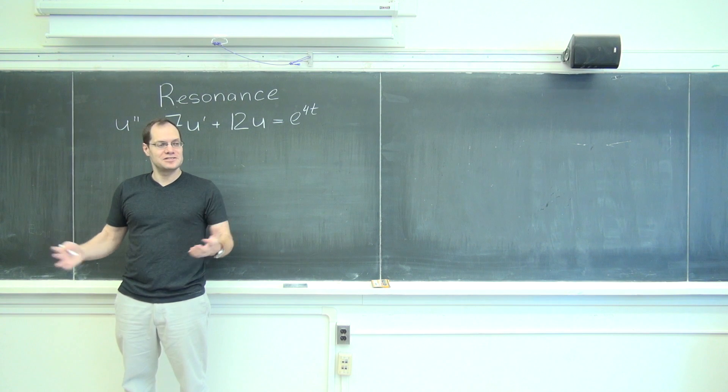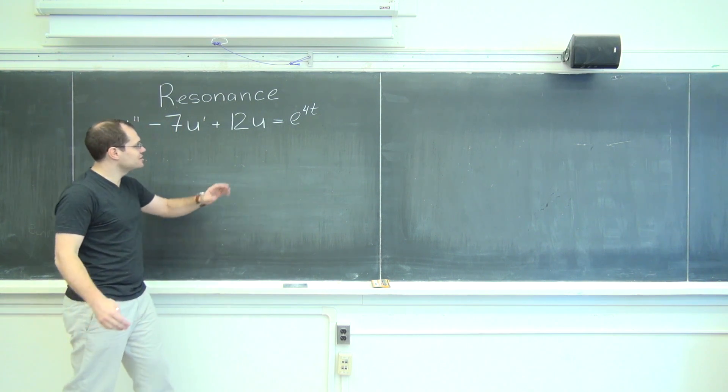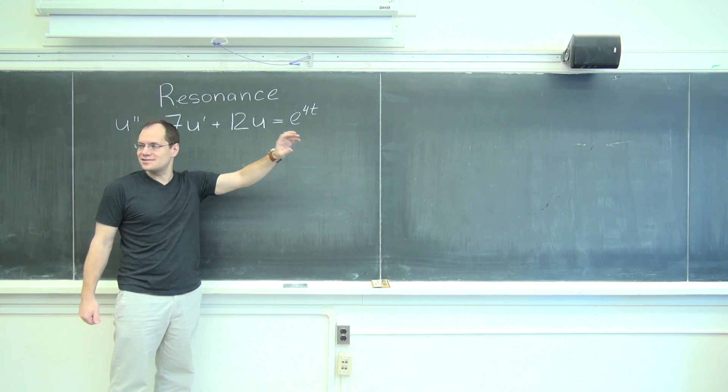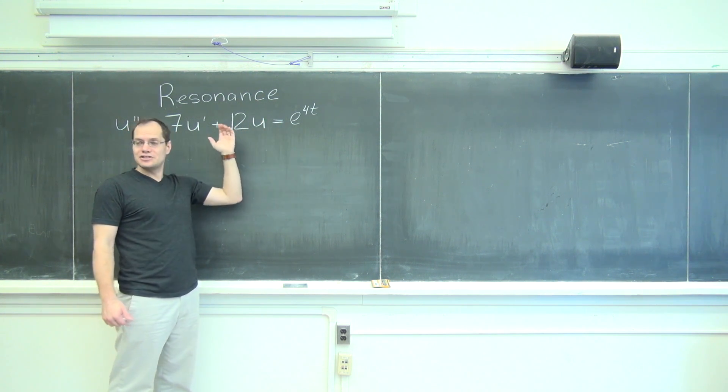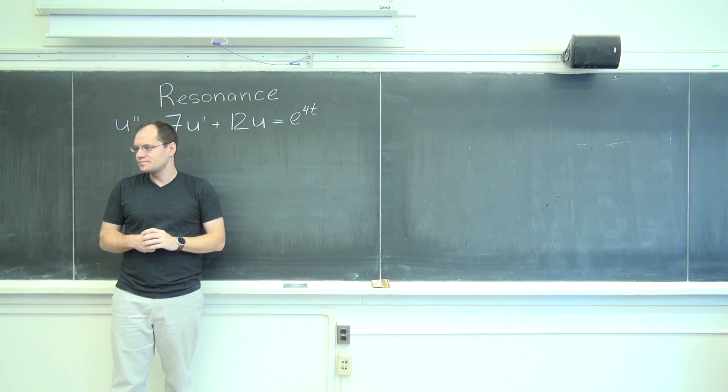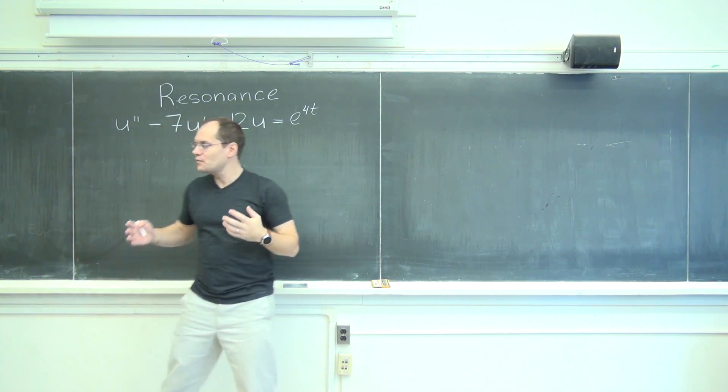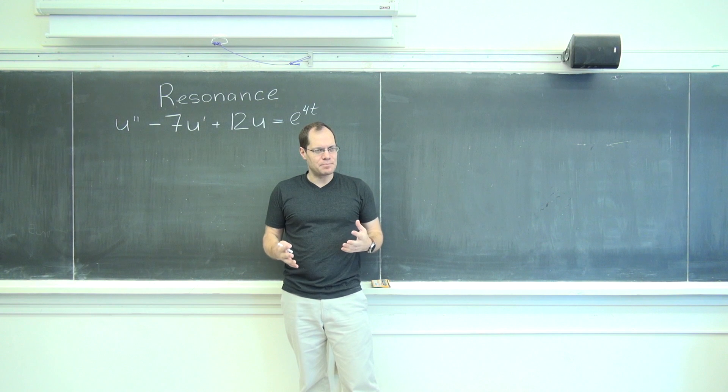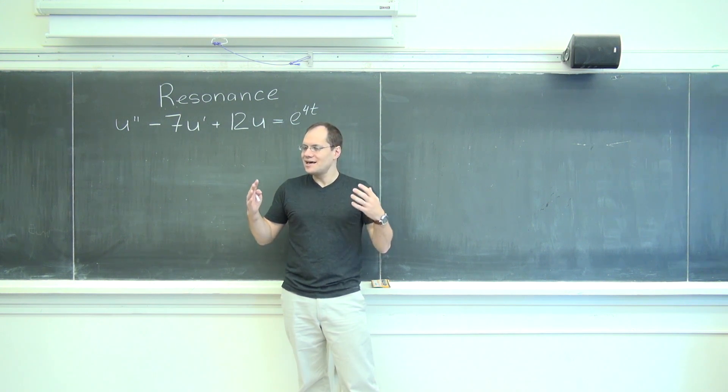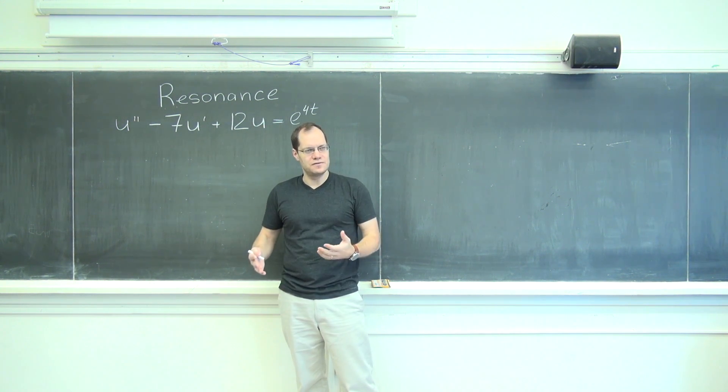Of course we're going to talk about an inhomogeneous equation because it's the right-hand side that creates the effect, not by itself but by its interplay with the left hand side. So as I mentioned last time we'll look at this equation and we don't suspect the trap because it looks like any other equation that we've solved.